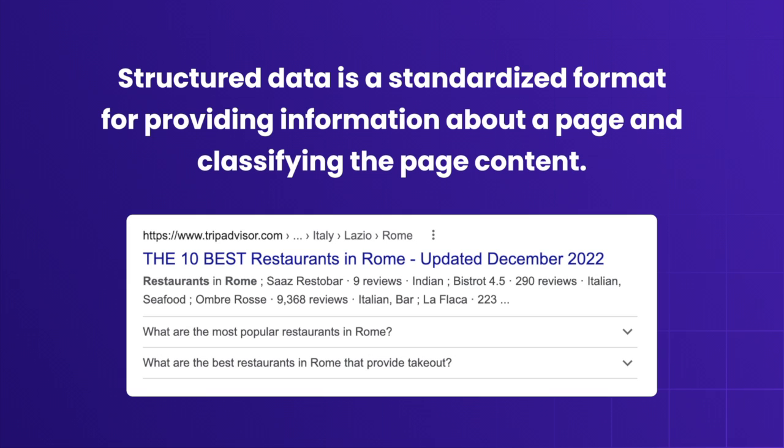You can help search engines by providing explicit clues about the meaning of a page by including structured data on the page. Structured data is a standardized format for providing information about a page and classifying page content. Suppose we have an FAQ page on our site and we would like to add structured data to it in order to get a rich FAQ result. Let's assume that your FAQ is a single type in your Strapi project — in this case, you need to add a JSON field to your structured data in JSON format.